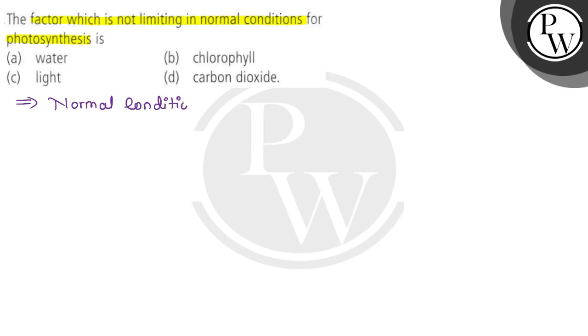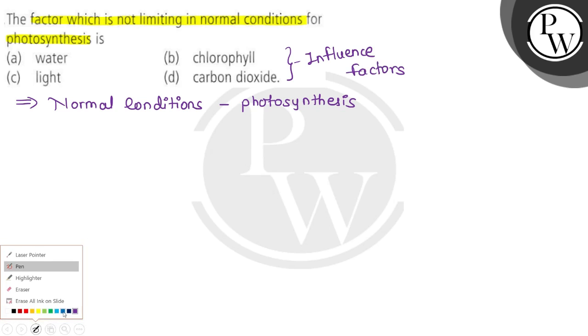We're discussing the photosynthesis process and which factor will not affect it in normal conditions. All four options are listed, but the factors that influence plants work in two ways: one is external and the other is internal.